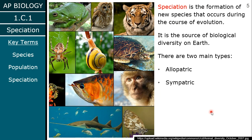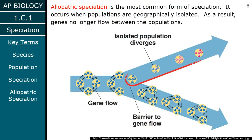Speciation is basically when you take one species and turn it into two species. There are two main types of speciation that occur in the wild: allopatric and sympatric. 'Allo' means different and 'sim' means similar or same — that becomes important in their definitions. Allopatric speciation is way more common than sympatric.